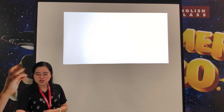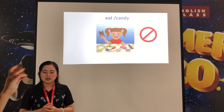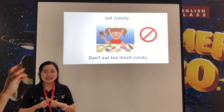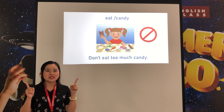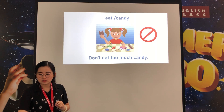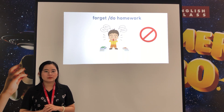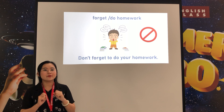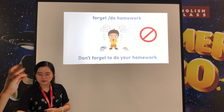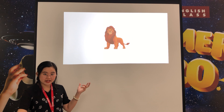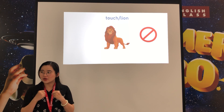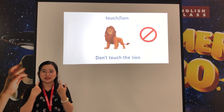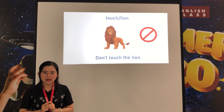Let's do some practice. 'Eat and candy and DON'T' — the answer is: 'Don't eat too much candy.' DON'T plus verb: don't eat. Next: 'Don't forget to do your homework.' DON'T plus verb: don't forget. Final one — this is a lion, so it's dangerous. The sentence is: 'Don't touch the lion.' DON'T plus verb.